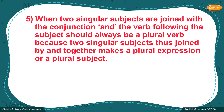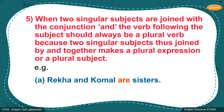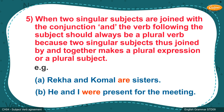Rule 5: When two singular subjects are joined with the conjunction 'and', the verb following the subject should always be a plural verb, because two singular subjects joined by 'and' together make a plural subject. Example A: 'Rekha and Komal are sisters.' Example B: 'He and I were present for the meeting.'